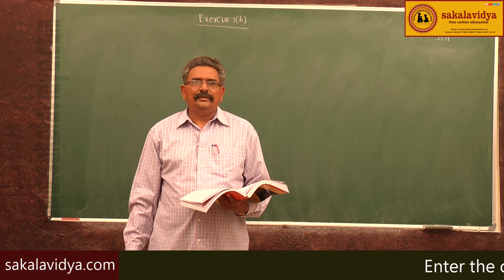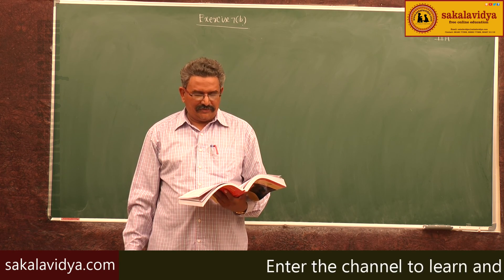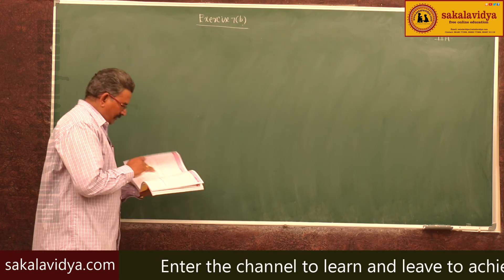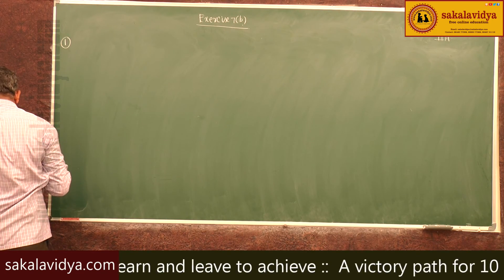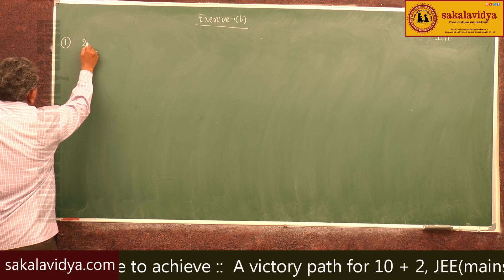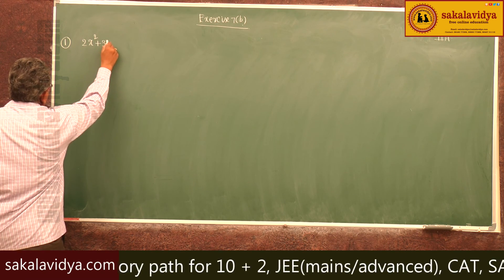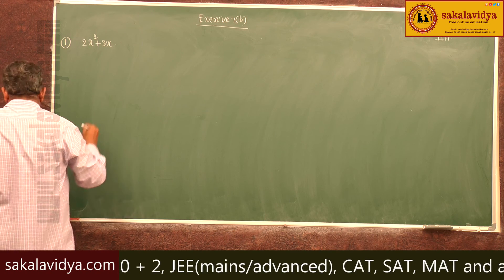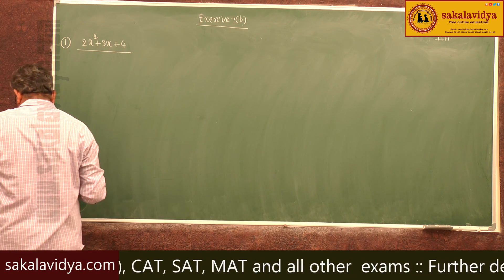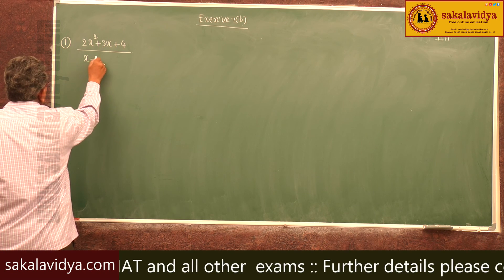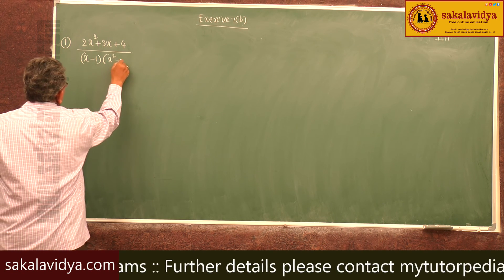Let us solve exercise 7b on partial fractions. The first problem: resolve (2x² + 3x + 4) / [(x - 1)(x² + 2)] into partial fractions.